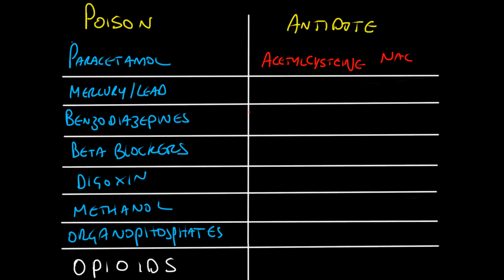Mercury and lead can be treated with dimercaprol. These are not very common anymore — lead pipes went away, mercury is not very common — but arsenic poisoning still occurs, and the drug used to treat it is also called dimercaprol.